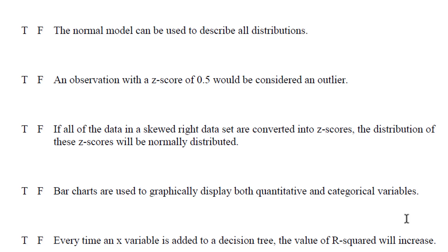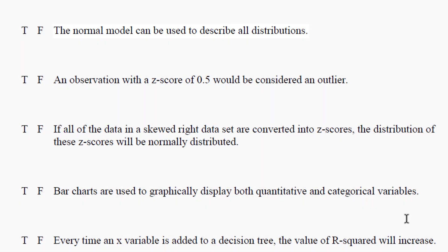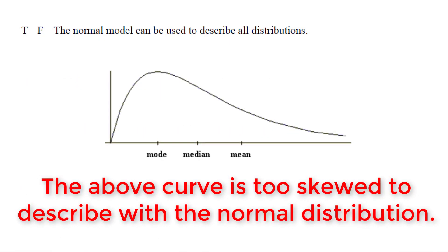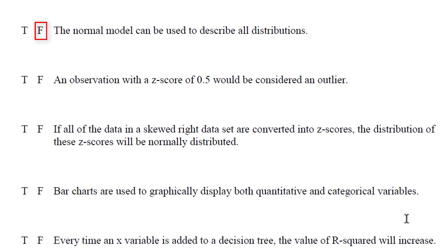Finally, let's do the true and falses. The first true and false asks that the normal curve can be used to describe all distributions. As you saw on your assignments, we had some data from football players, and the data was not normal. All the things we did with it were wrong if we used the normal. So the normal cannot be used to describe all distributions. This is definitely false. The normal model can only be used for data that is normal, which is unimodal and symmetric.